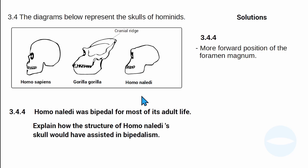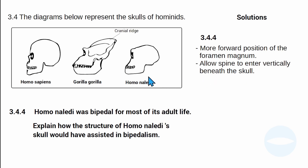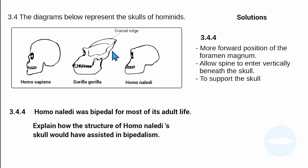Because the foramen magnum is at the center of the skull, it allows the spine to enter vertically beneath the skull, enabling the organism to stand and walk on two legs. In the gorilla, because the foramen magnum is toward the back, the spine cannot enter vertically, making it difficult to stand on two legs — so the gorilla is quadrupedal, using four legs to walk.